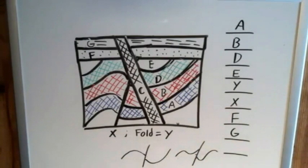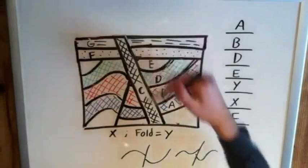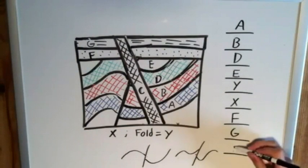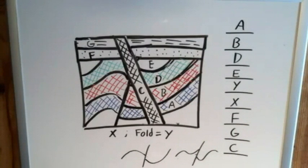And finally, we come to our igneous intrusion C. And since by the law of cross-cutting relationships, because it cuts through everything that we see in this picture, it must be the youngest. So C comes at the very end. So we have A, B, D, E, Y, X, F, G, C in that order from oldest to youngest.